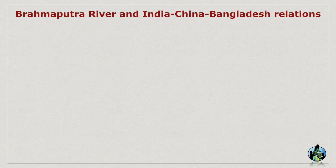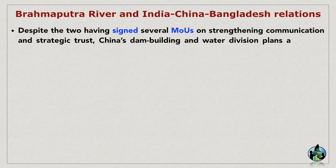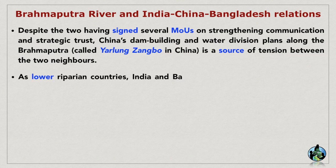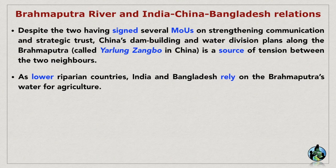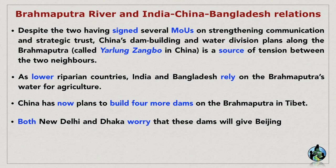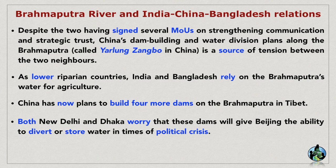Brahmaputra River and India-China-Bangladesh Relations: Despite the two having signed several MOUs on strengthening communication and strategic trust, China's dam building and water diversion plans along the Brahmaputra — called Yarlung Zangbo in China — is a source of tension between the two neighbours. As lower riparian countries, India and Bangladesh rely on the Brahmaputra's water for agriculture. China has now planned to build four more dams on the Brahmaputra in Tibet. Both New Delhi and Dhaka worry that these dams will give Beijing the ability to divert or store water in times of political crisis.